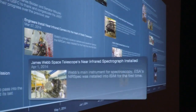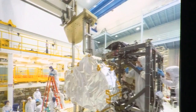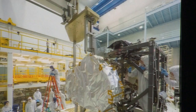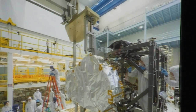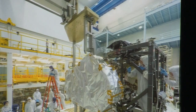After NIRCam was installed, we had one instrument left to go — the European Space Agency's NIRSpec. Here you can see it mounted on the outside of the ISIM, like the Mid-Infrared Instrument MIRI on the other side. With the installation of these instruments, the ISIM was completed and ready to go into cryo testing that happened in the summer.